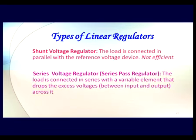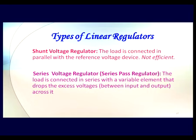Linear regulators also have two types within them: a shunt voltage regulator and a series voltage regulator, also called a series pass regulator. In the shunt voltage regulator, the load is connected in parallel with the reference voltage device, so the load always sees a fixed voltage equal to the reference voltage — but it is not a very efficient circuit. In the series voltage regulator, the load is connected in series with a variable element that drops the excess voltage between input and output across it. That is called the series pass element, which does the dissipation. These circuits are very commonly used, and you will most often come across series voltage regulators because they are more efficient on the power side.